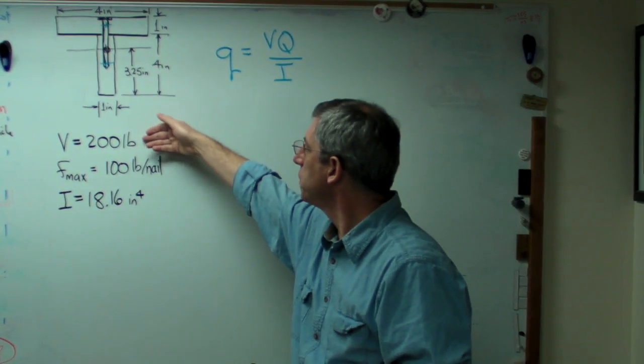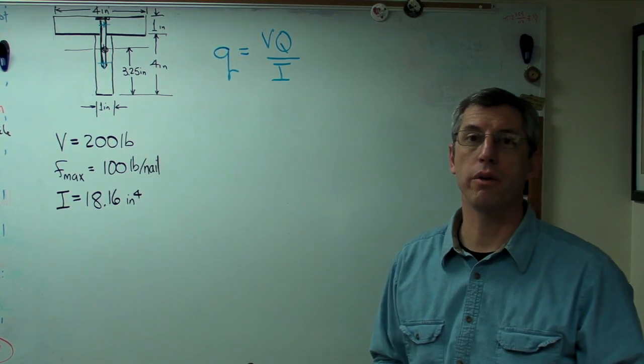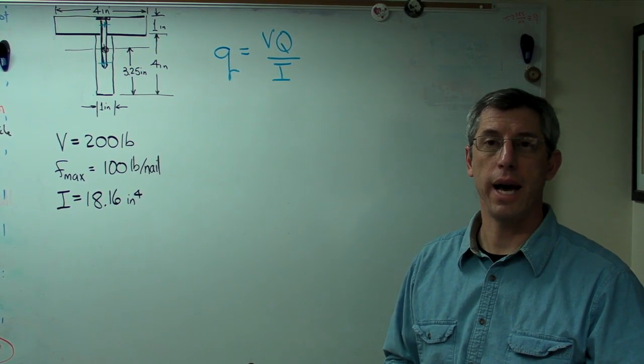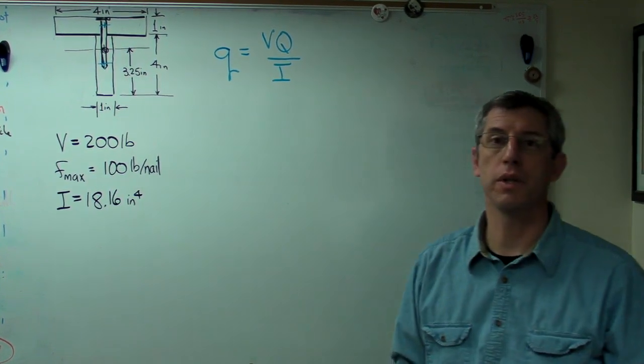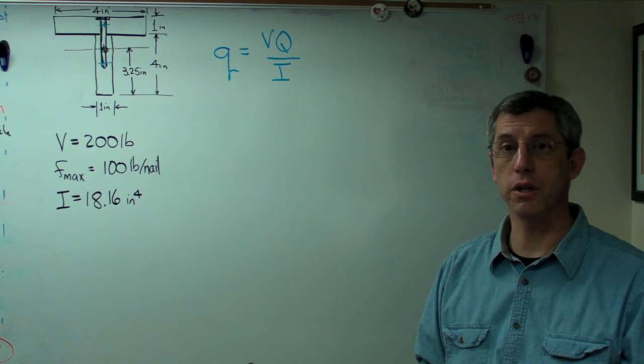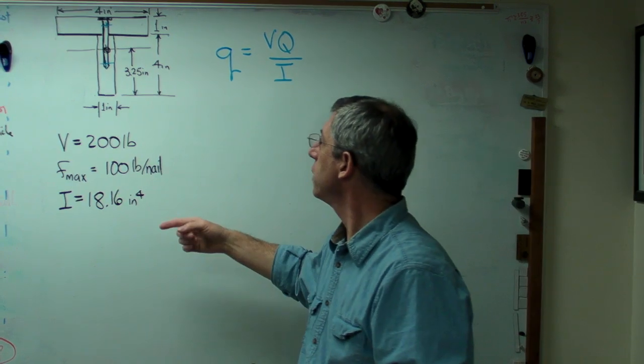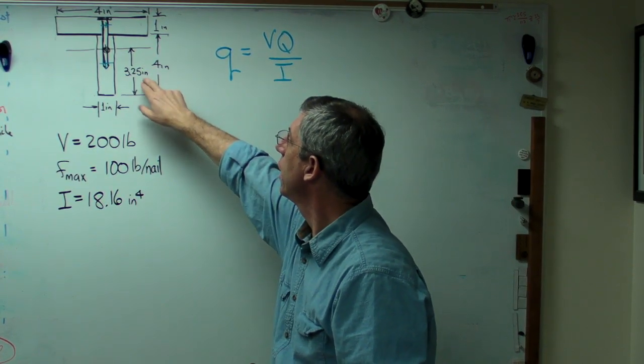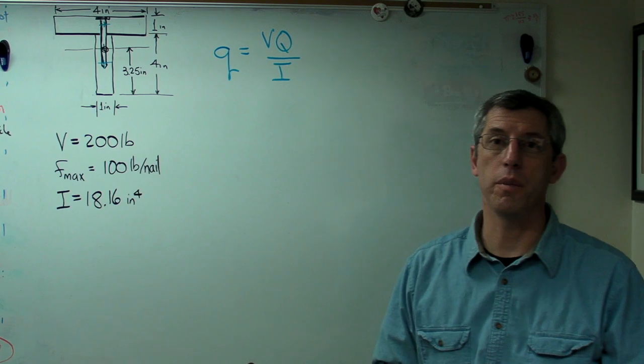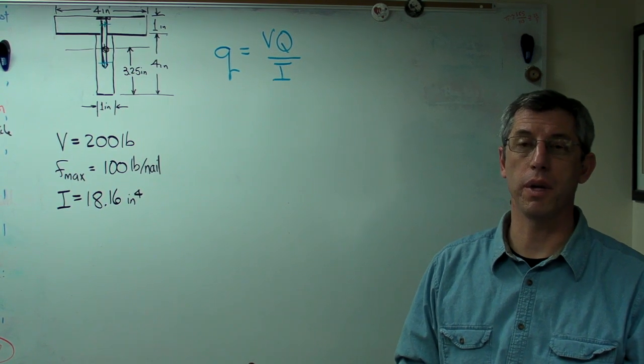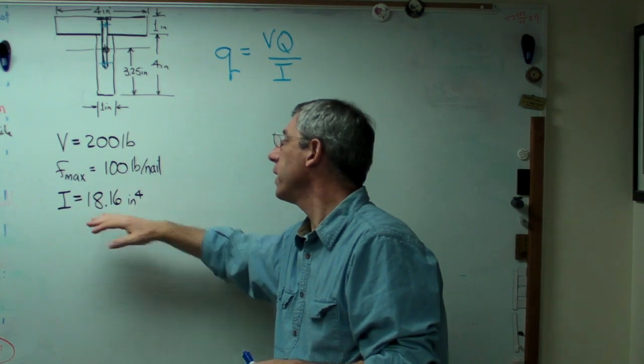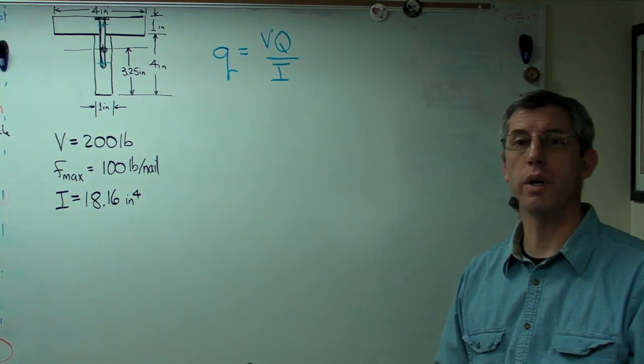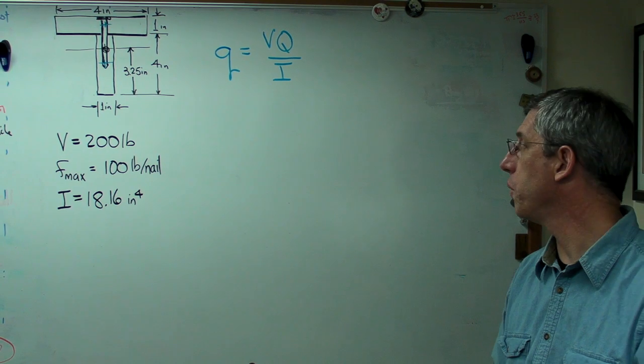To complete the problem we specify that there's a 200 pound shear force acting on the beam. That these nails that are being used to make the beam can each resist 100 pounds of shear force. And to save some time, I've already calculated the centroid of the beam. It's three and a quarter inches from the bottom face of the beam. And I've also calculated the area moment of inertia. It's 18.16 inches to the fourth.